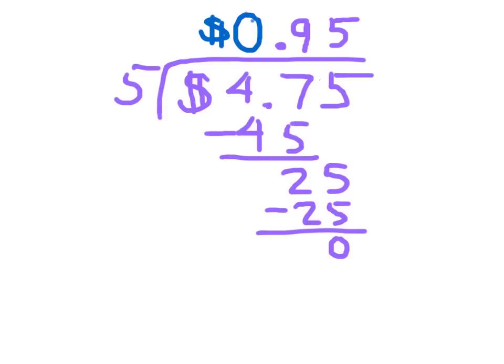So if I gave them each about $1, that's $1, $2, $3, $4, $5. Yeah, that's very close to $4.75. My answer is reasonable.